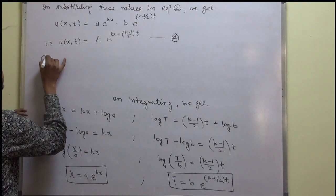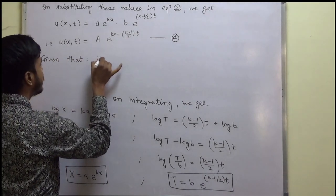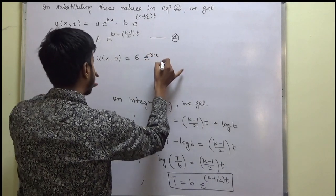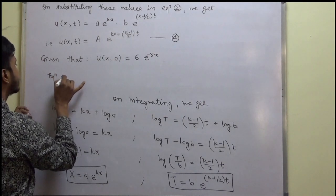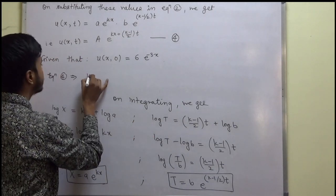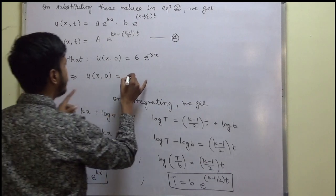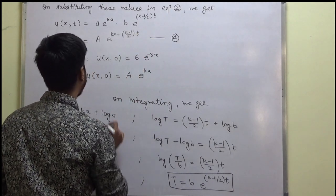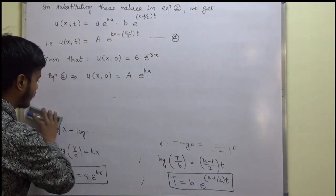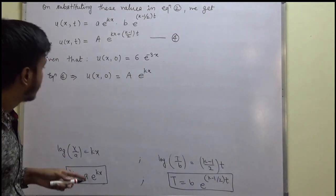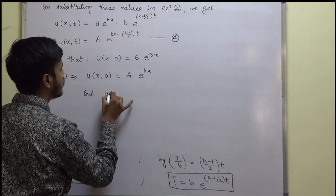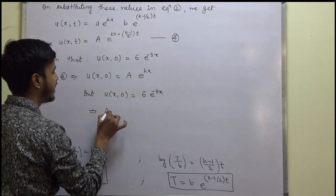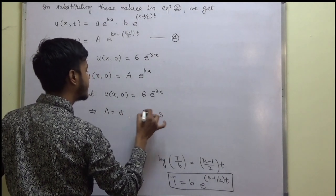We are given the condition u(x, 0) = 6e^(−3x). Applying this to equation 4 by putting t = 0: u(x, 0) = A·e^(kx). Comparing with 6e^(−3x), we get A = 6 and k = −3.